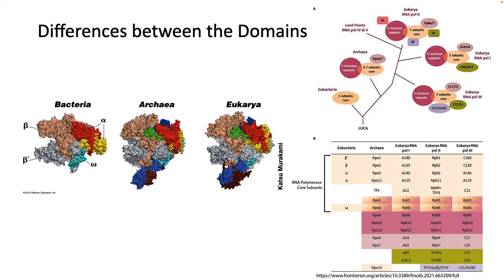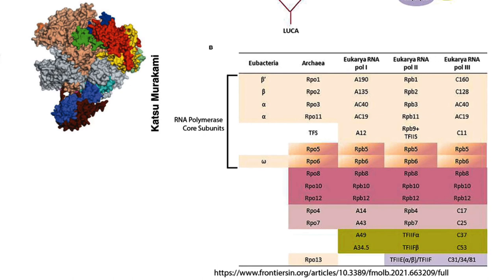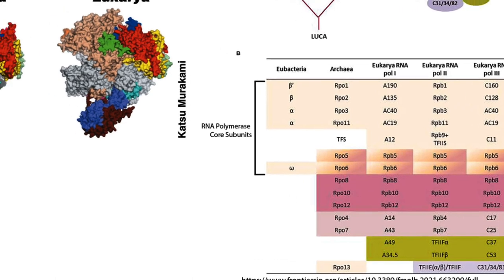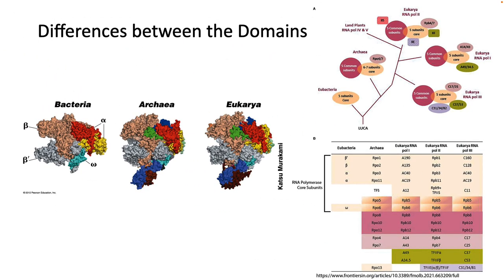Creating RNA from DNA by using a DNA-dependent RNA polymerase is a function that all living things must do. It's no surprise that RNA polymerase shares homology between even distantly related organisms. There is a set of five core enzymes shared among them, as shown in the table and in the structures. However, archaea and eukarya have more subunits, one function of which is to deal with histones that the DNA is tightly wrapped around in both these sets of organisms.